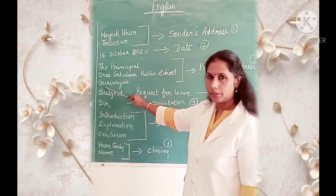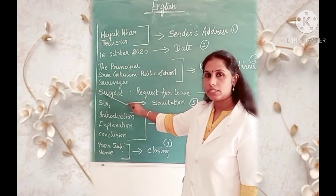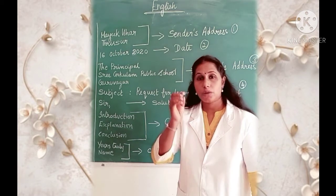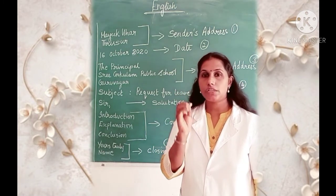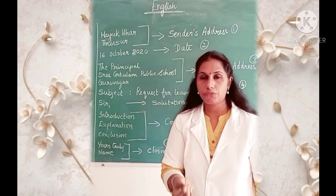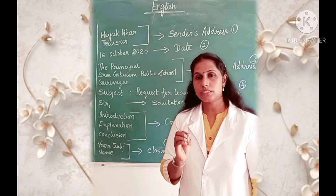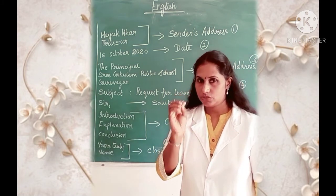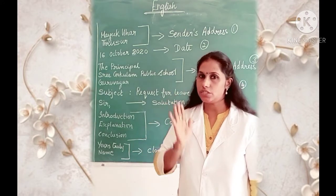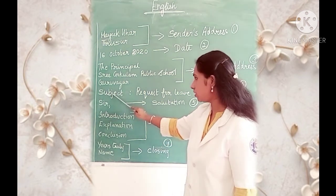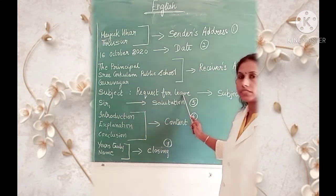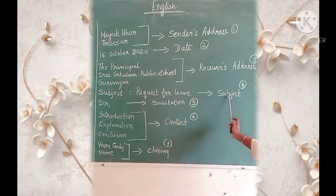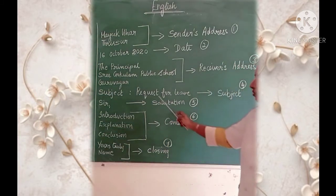Then, again you leave a line and write the subject. What do you mean by subject? The subject is the content — what you are planning to write the letter about — in brief. Brief means the short, important words of what you are expecting from the receiver. The subject should always be written in a maximum of three or four words only. You will write 'Subject:' and then write the reason for writing the letter. For example, here it is 'Request for Leave.' That is the fourth part of your letter.